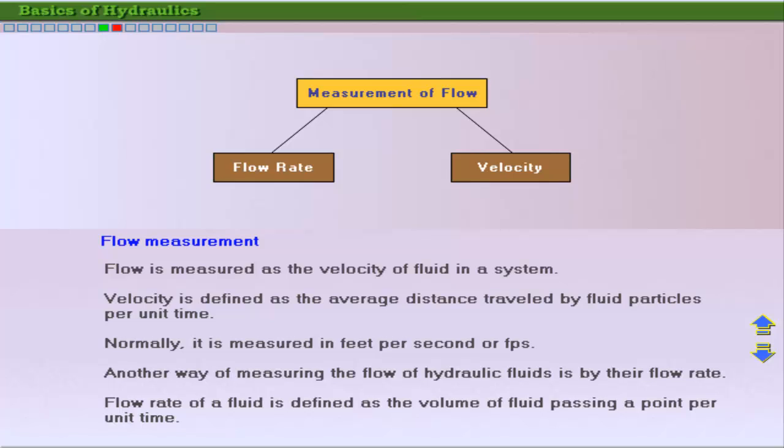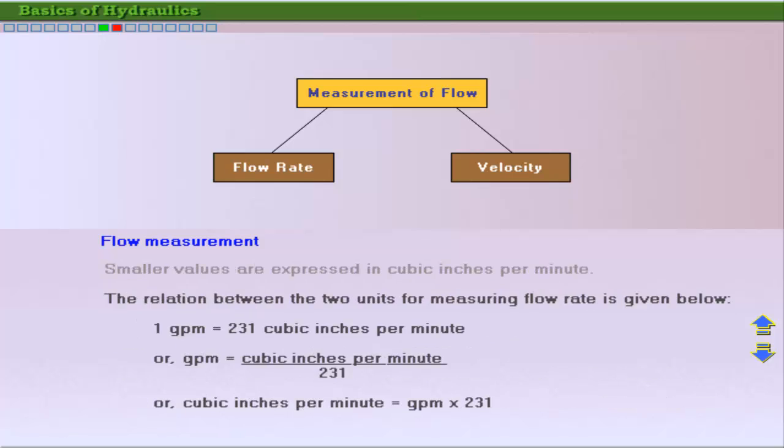The flow of hydraulic fluids can also be measured by their flow rate. Flow rate is defined as the volume of fluid passing a point per unit time. Large flow rates are measured in gallons per minute, or GPM, while smaller values are expressed in cubic inches per minute. These rates are used to calculate actuator speeds. The two units of flow rate measurement can be easily converted to each other.